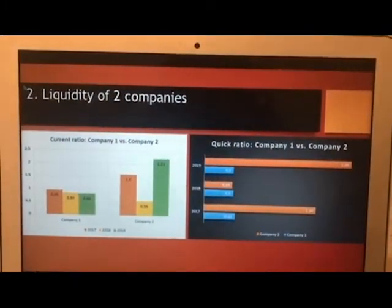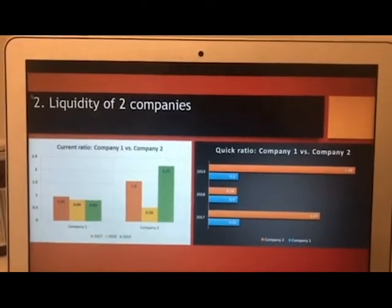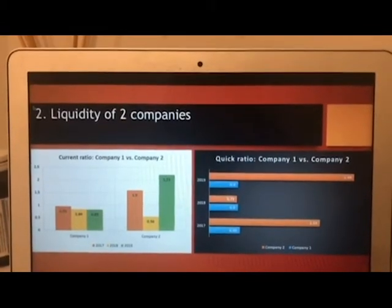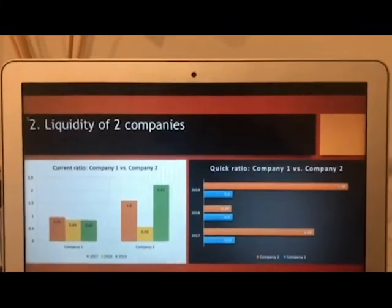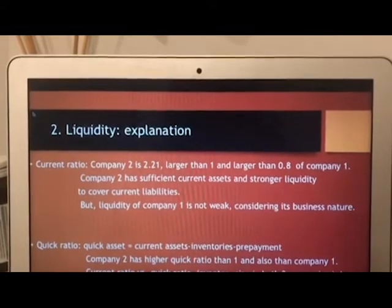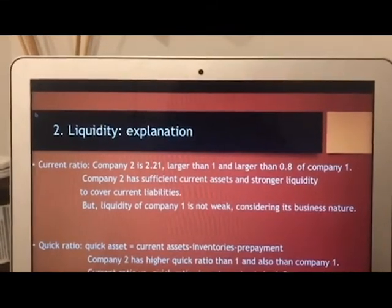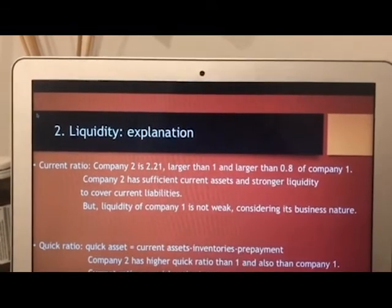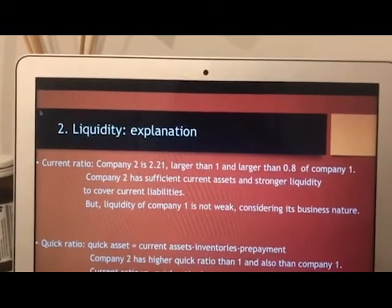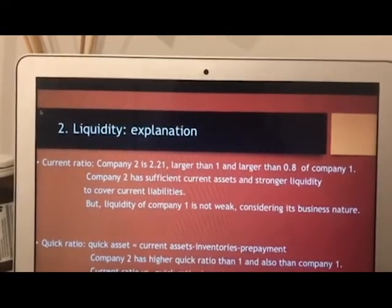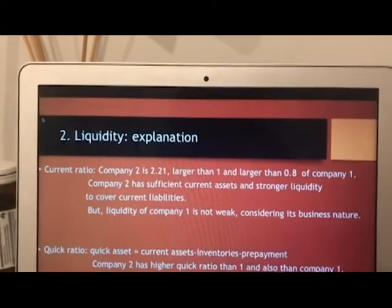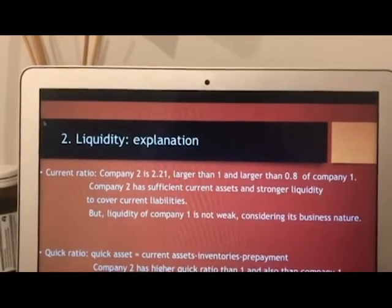Now I will analyze the liquidity of two companies. These two graphs show the comparison of two companies in current ratio and quick ratio. The current ratio of company two is 2.2, higher than one and higher than 0.8 of company one. Company two has sufficient current assets and stronger liquidity to cover current liabilities, but the liquidity of company one is not weak, considering its business nature.